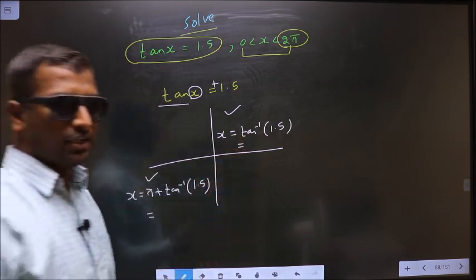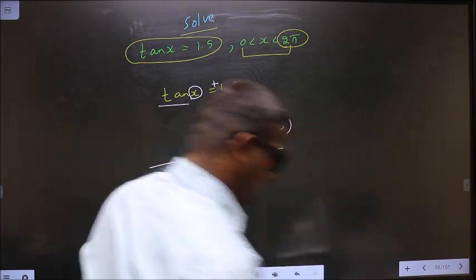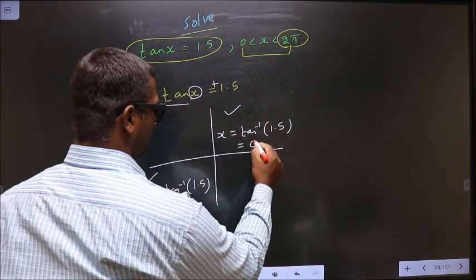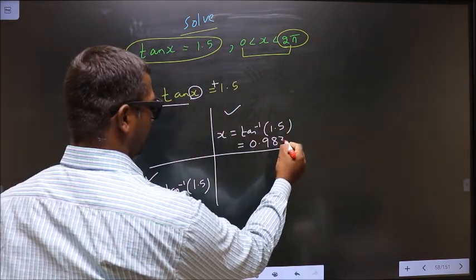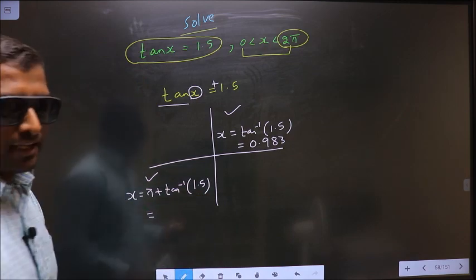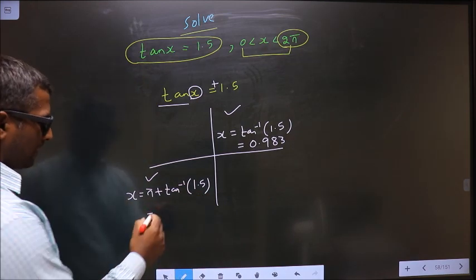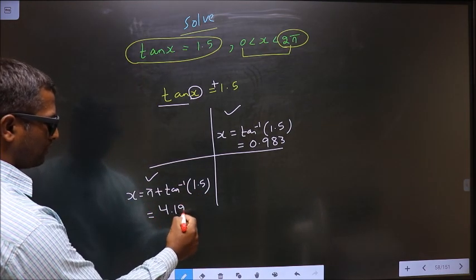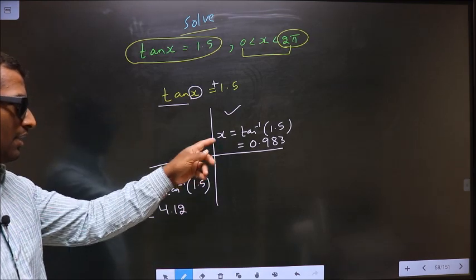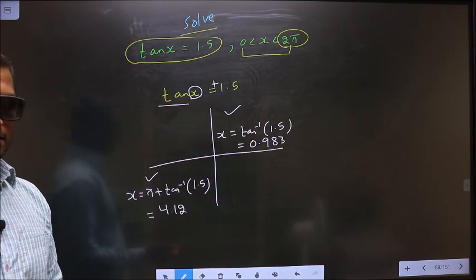Now you put this in the calculator, you should get 0.983. You put this in the calculator, you should get 4.12. These are our answers.